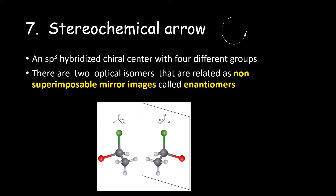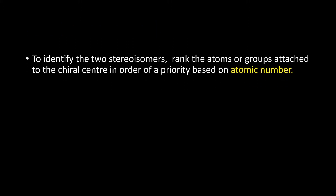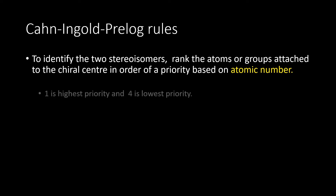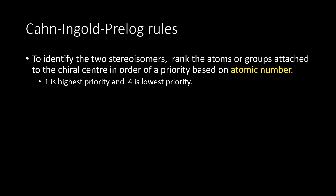More about this in a separate video. To identify the two different optical isomers, rank the atoms or groups of atoms attached to the chiral center in order of priority based on atomic number, starting with the atom directly attached to the chiral center. This follows the Cahn-Ingold-Prelog rule. Number one is the highest priority, associated with the highest atomic number, and the lowest priority is the lowest atomic number.